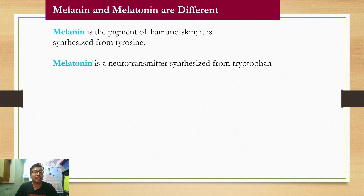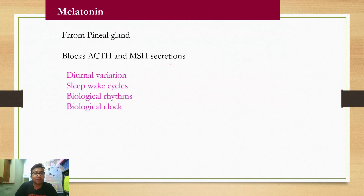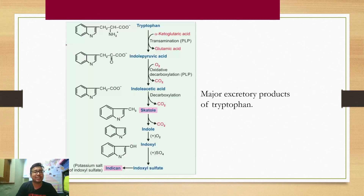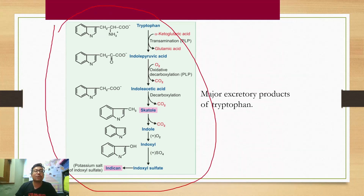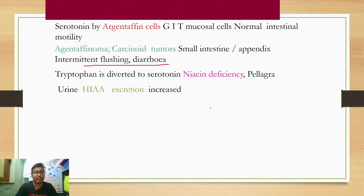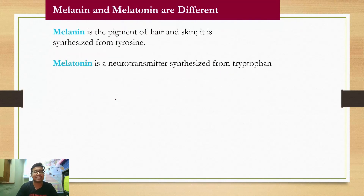One thing to be very careful about: melanin and melatonin are different. Melanin is a pigment produced from tyrosine, while melatonin is a neurotransmitter that helps in the sleep-wake cycle or diurnal variation — produced from the pineal gland and is a product of tryptophan. Regarding major excretory products of tryptophan, you do not need to remember indican, skatol, etc. The one excretory product you need to remember is 5-HIAA (hydroxyindoleacetic acid).